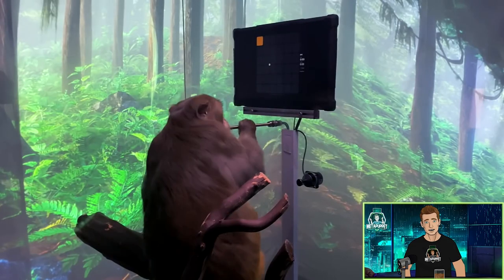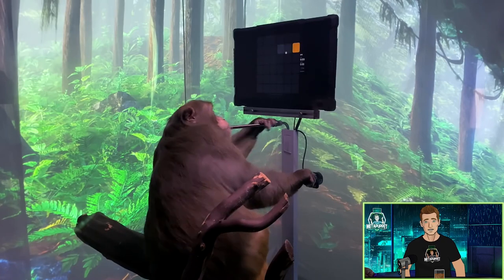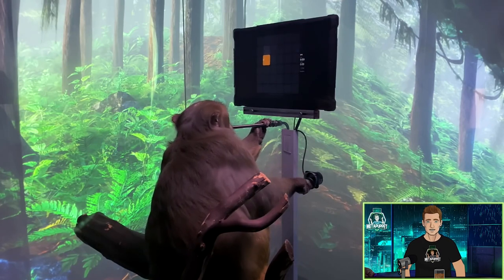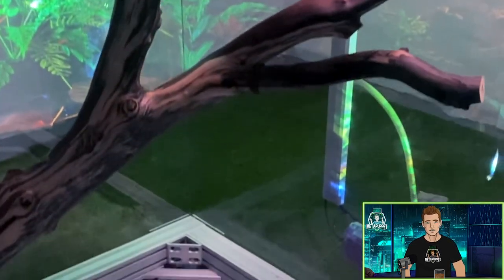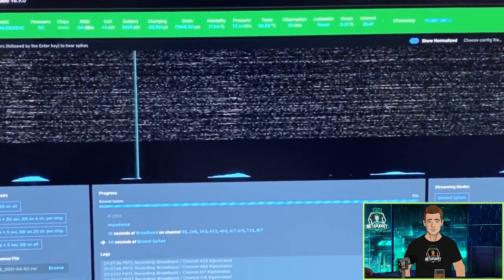So to demonstrate how this works, here's Pager again, the monkey with the N1 device implanted in his brain. He's using a joystick to move a cursor to the highlighted square on screen. The Neuralink device is wirelessly streaming in real time the firing rates from thousands of neurons in his brain to